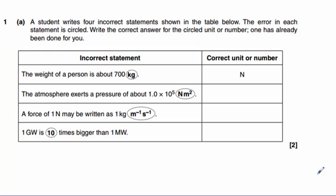Question number one gives us four statements that have errors circled. You see the first one has been completed for the person. The statement says that the weight of a person is about 700 kilograms. Well, weight is measured in newtons, not in kilograms. So the correct unit or number here should be newtons.